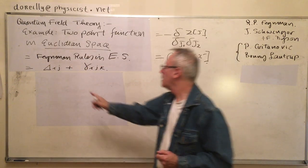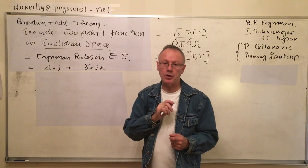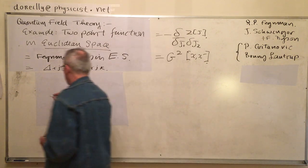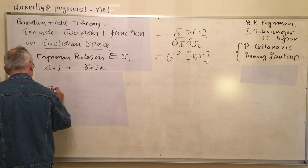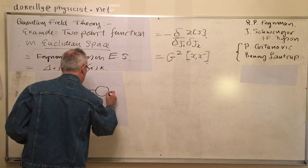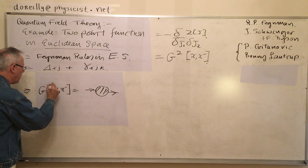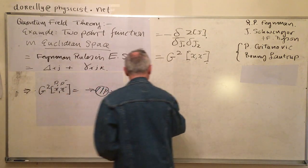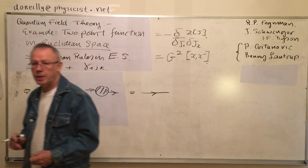We're looking at Feynman rules in Euclidean space. We're going to look at a simple theory where there are only two Feynman rules: one for the propagator and one for the interaction. Symbolically, I'll represent the two-point Green's function in momentum space or X space like this. That's going to consist of the only possible tree diagram for this case, which is the actual propagator itself.